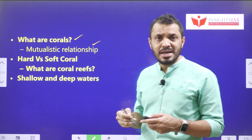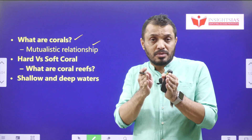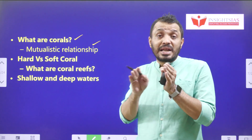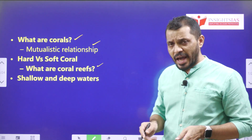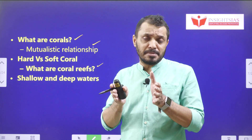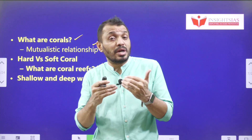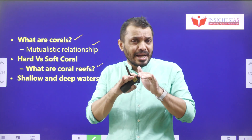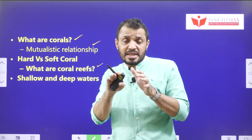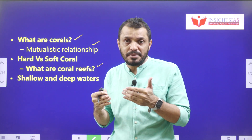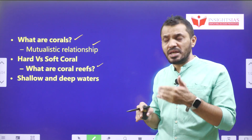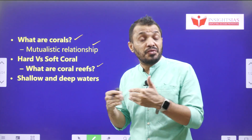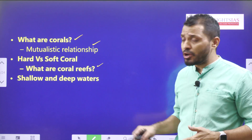Coral is a best example of a mutualistic or symbiotic relationship. When so many coral polyps — hundreds and thousands — come together, they form a coral reef. Coral reefs can be formed only by hard corals. There are two types of corals: soft corals and hard corals. Hard corals form a thick skeleton made up of calcium carbonate. Whatever coral reefs you've heard about, like the Great Barrier Reef, are formed due to hard corals.